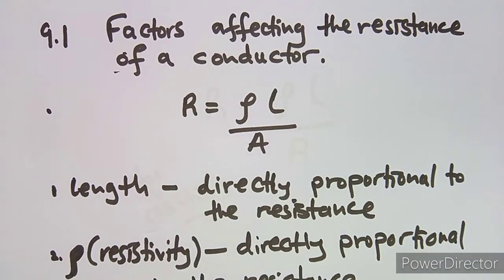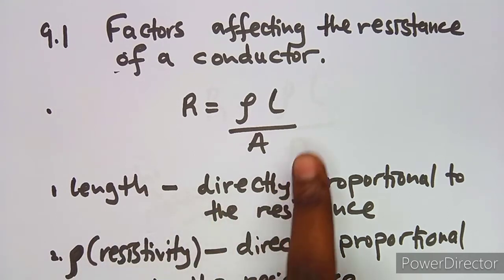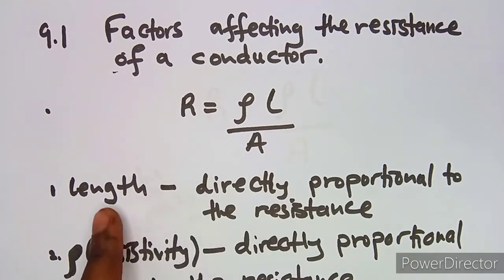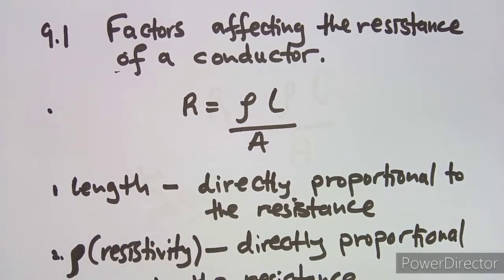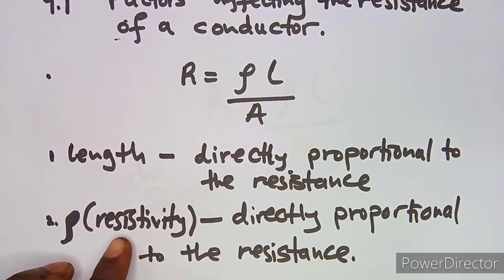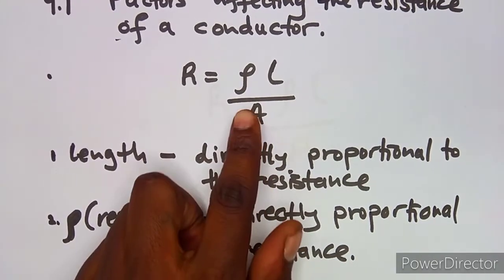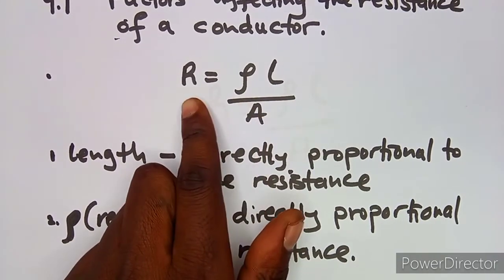The first factor is length. Length is directly proportional to the resistance of the conductor. The second factor is resistivity ρ, which is also directly proportional to the resistance of the conductor.